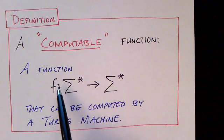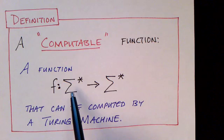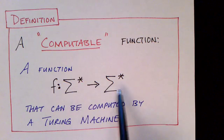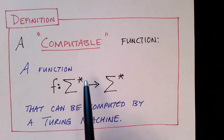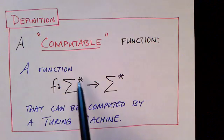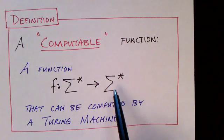So any function from sigma star to sigma star, in other words, the domain is a finite sequence of symbols and the range is a finite sequence of symbols.